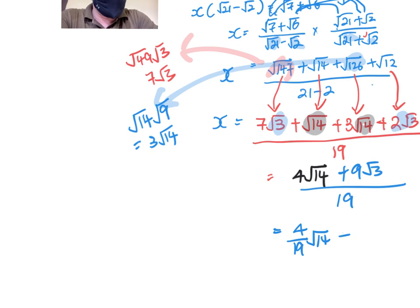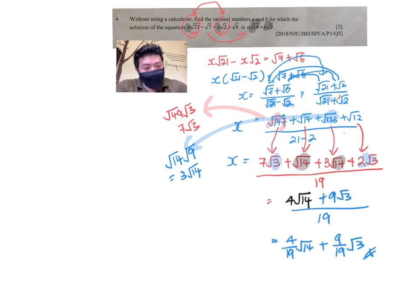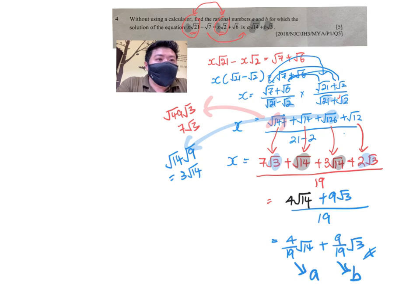Now combining this together, you are almost done. Just split up the fraction, and there you go—you have your a and b. This is your a and this is your b. And that's all for this question.